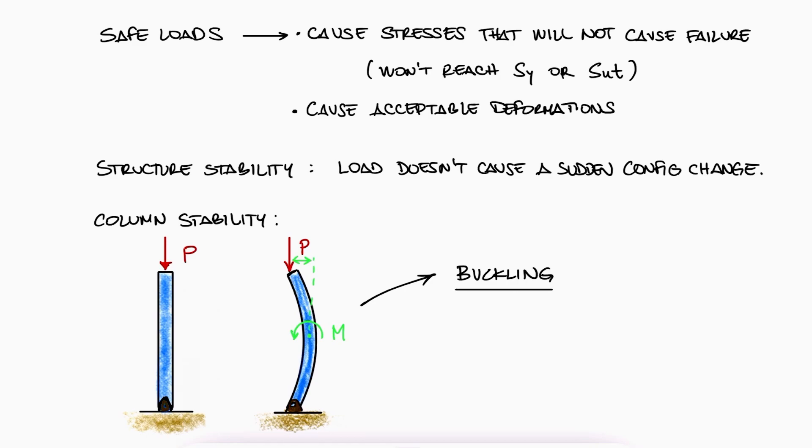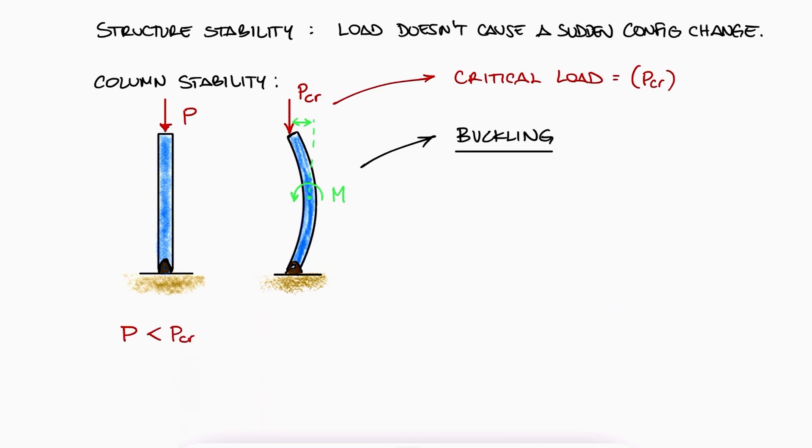The load for the column to lose its stability is called the critical load, and we use the P_cr notation for it. If P is lower than P critical, the system is stable. If P is greater than P critical, the system is unstable and the column will buckle.